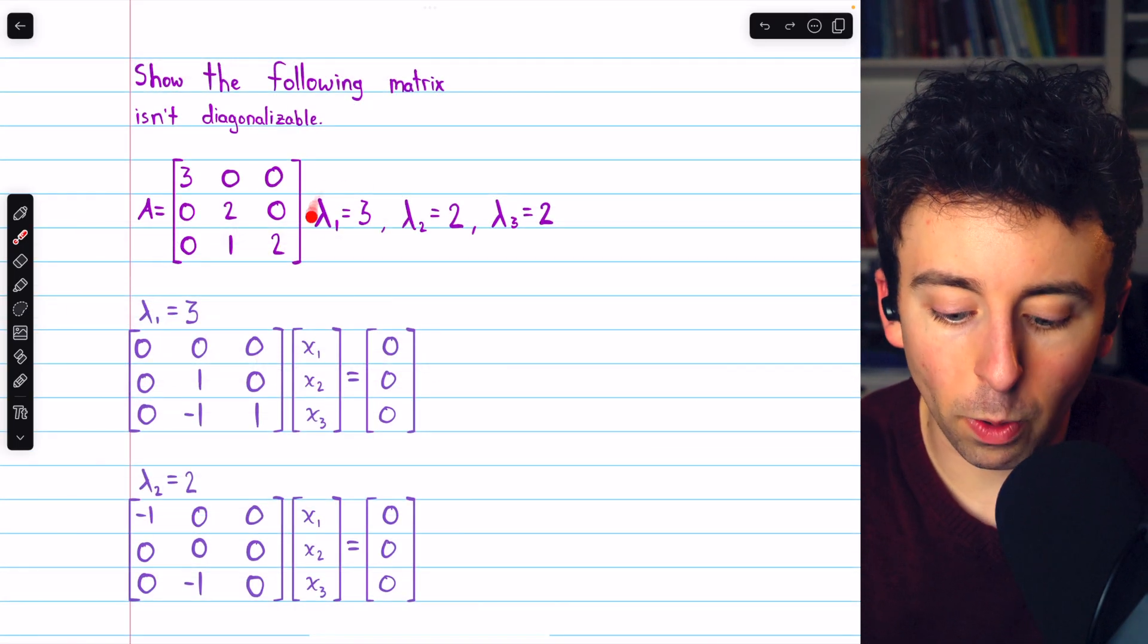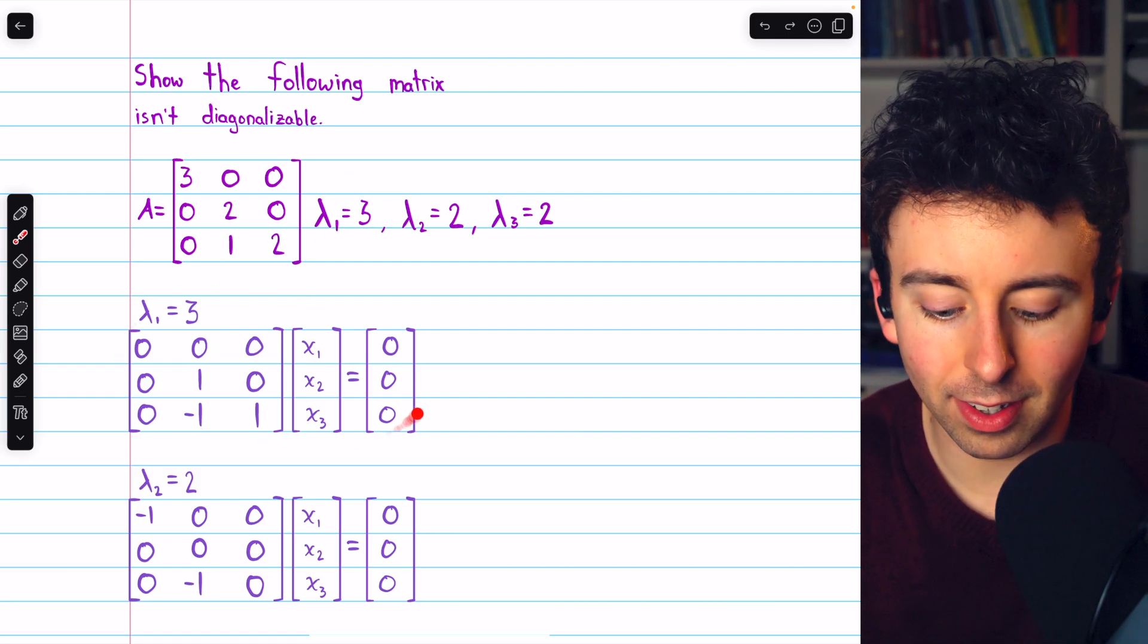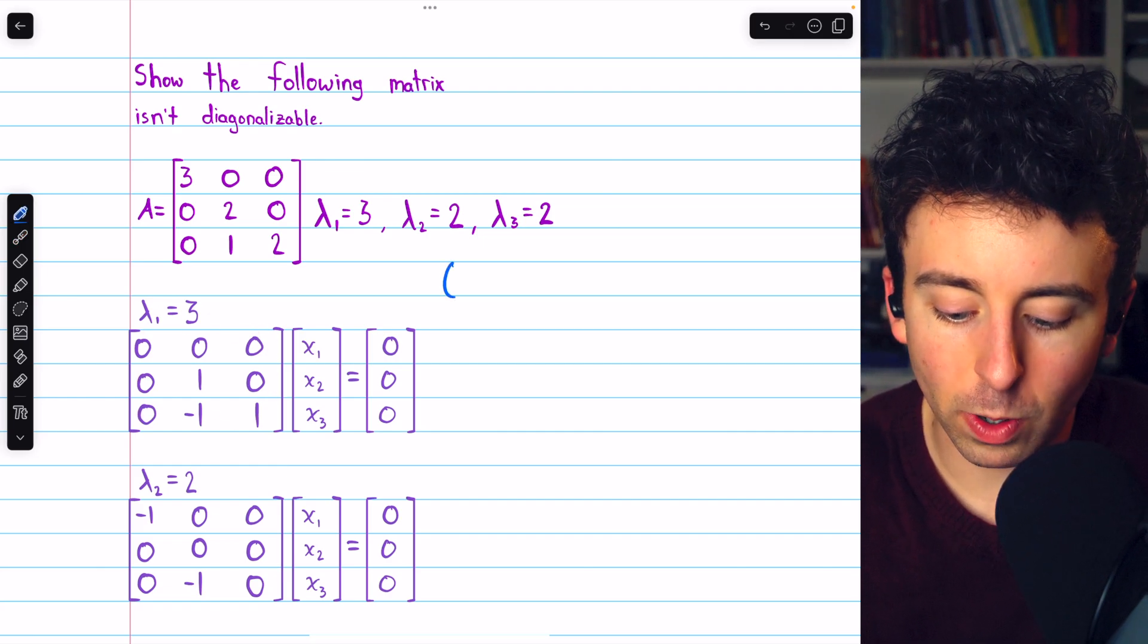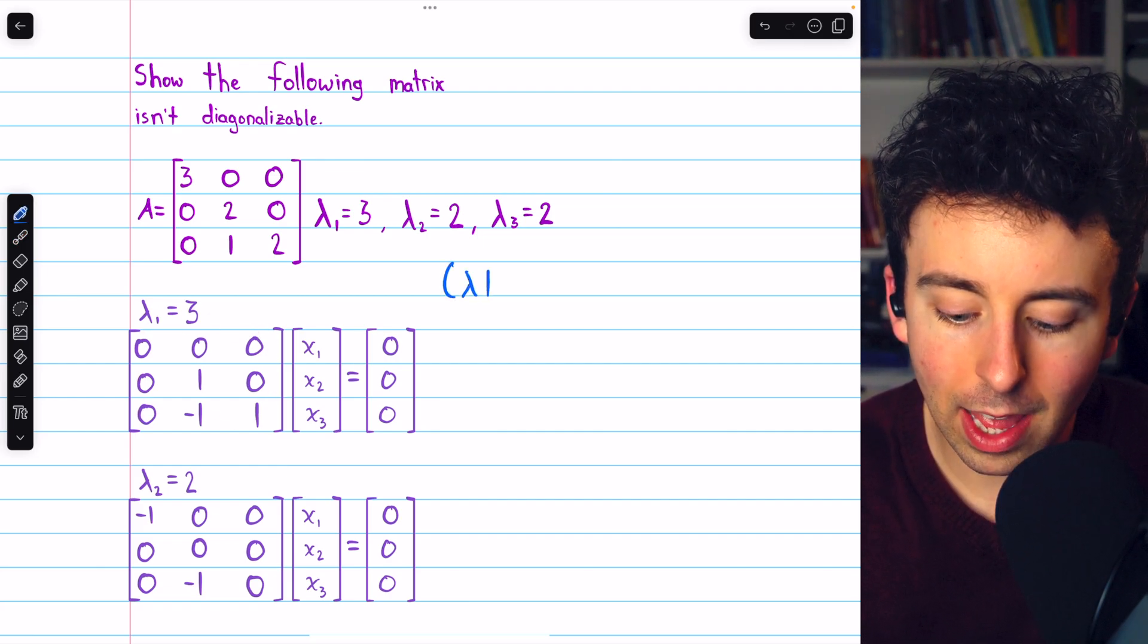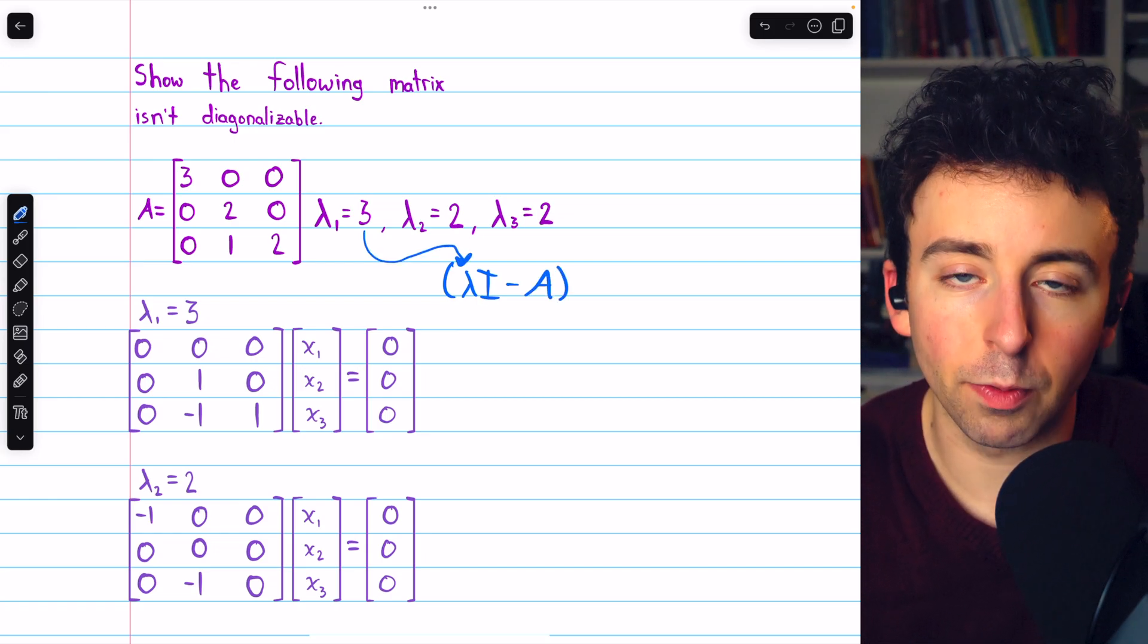The eigenspace corresponding to the eigenvalue 3 is the solution space of this system, where this coefficient matrix is the matrix lambda I minus A, but with 3 plugged in for lambda.